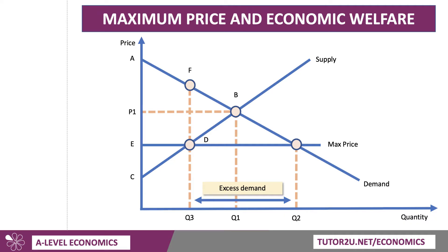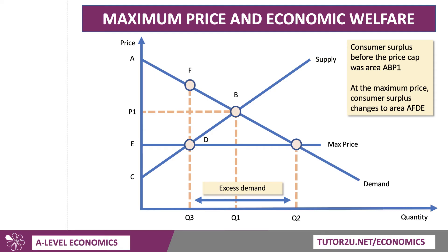I've driven up to the demand curve at point F because that's going to be important. Consumer surplus before the price cap was area A, B, P1. Now after the price cap, the price falls from P1 to E, which increases consumer surplus. But the quantity goes down from Q1 to Q3, which decreases consumer surplus. So at the maximum price, the new area of consumer surplus changes to area A, F, D, E. That is because output is restricted to Q3 — there was that little triangle to the right of it below the demand curve. You can't have consumer surplus if the good or service is not consumed.